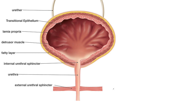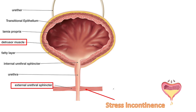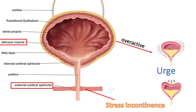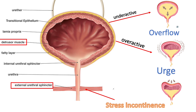I'm going to give you a little short scheme first. There are two muscles that can go wrong with the types of urinary incontinence: either the detrusor muscle or the external urethral sphincter. If the external urethral sphincter is not functioning properly, that leads to stress incontinence. If the detrusor is overactive, you get urge incontinence. If it's underactive or inhibited, you get overflow incontinence.